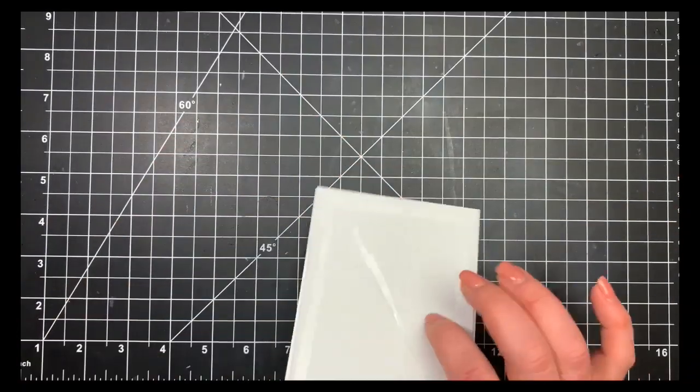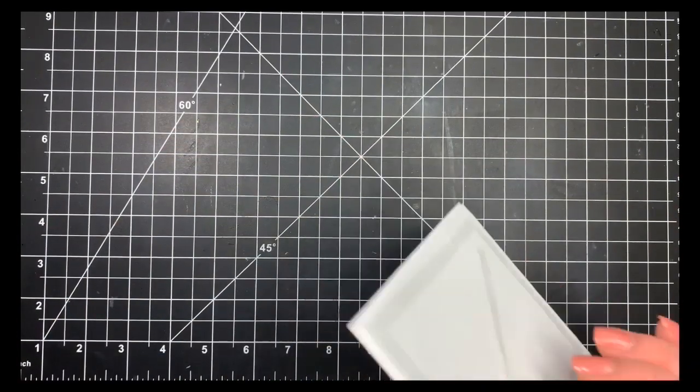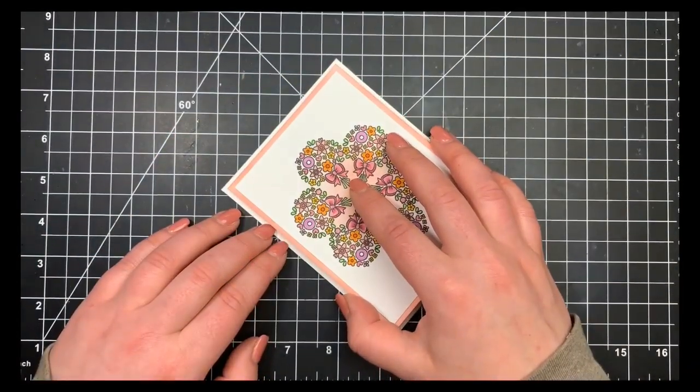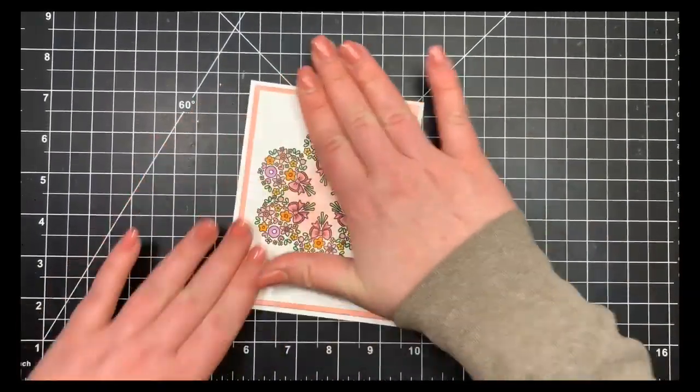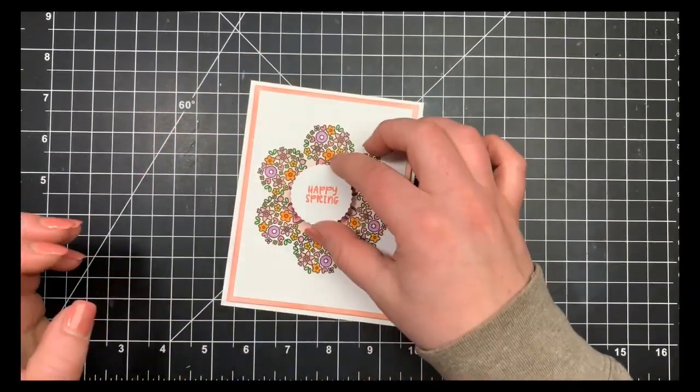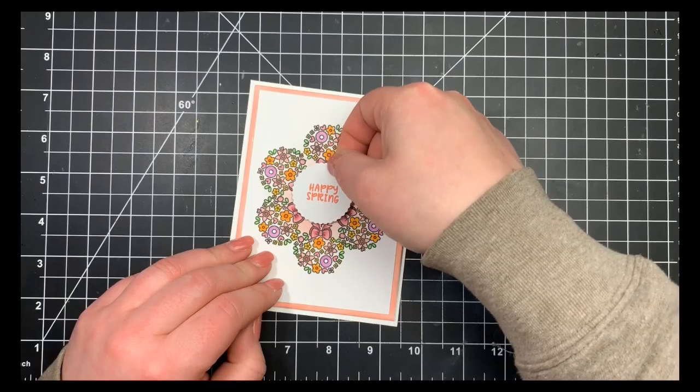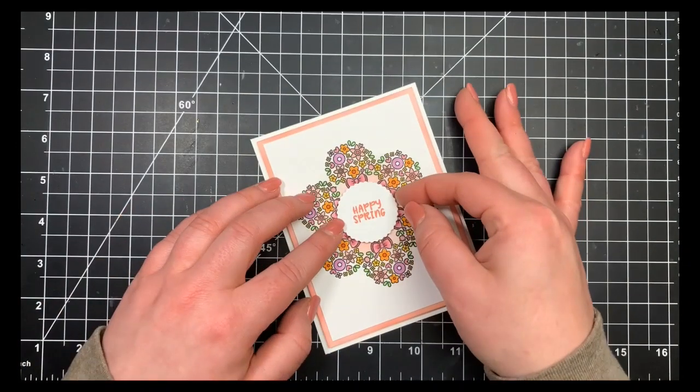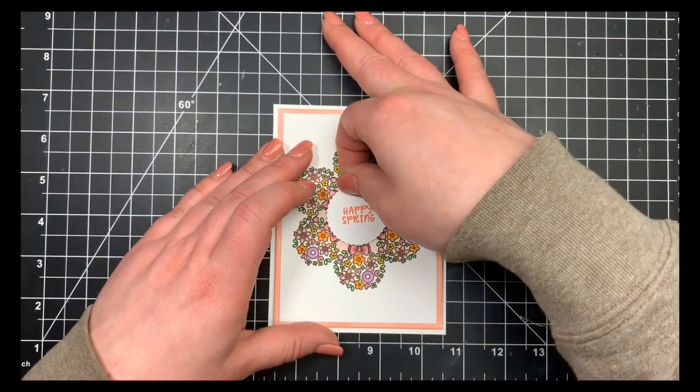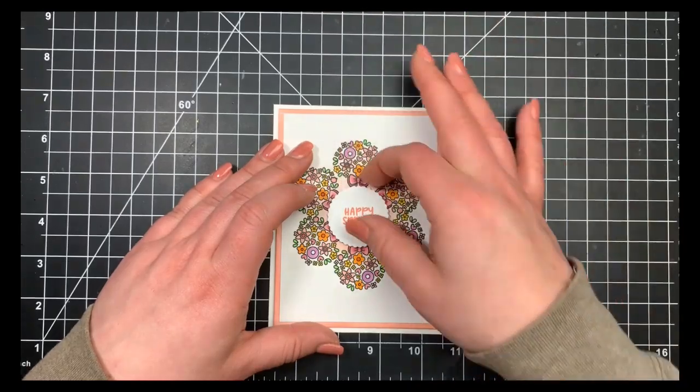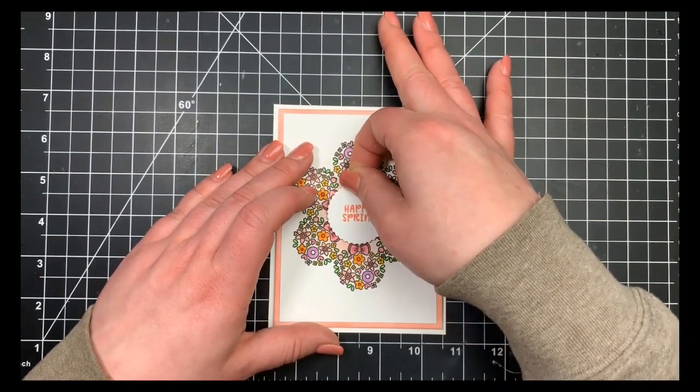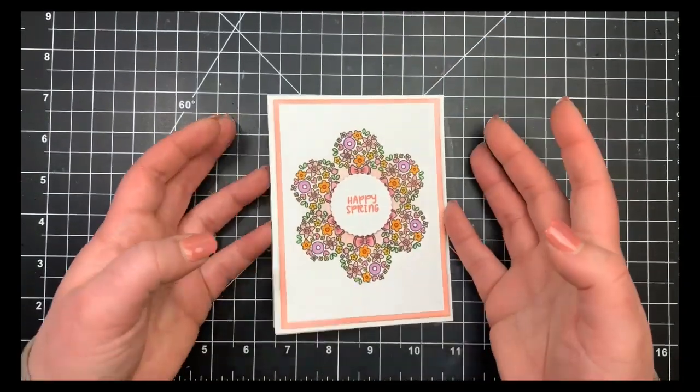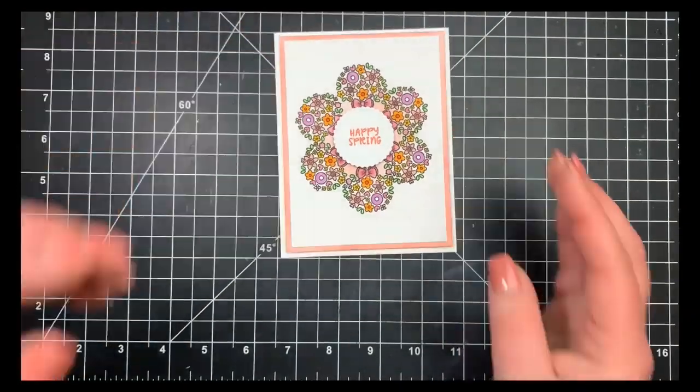Once everything was adhered together, I took a small piece of Scotch foam tape to pop up my little sentiment circle right there in the center of my little bouquets. That is it for today, guys. Don't forget about the discount code, and thanks for stopping by. Have a great day, bye!